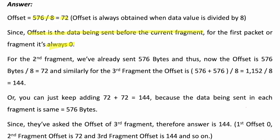For the second packet, we have already sent 576 bytes, so the offset is 576 divided by 8, which equals 72. For the third fragment, we have already sent 2 fragments, so the value is 576 plus 576 divided by 8, which is 1152 divided by 8, equal to 144. You can also keep adding 72 each time: 72 plus 72 equals 144. Since they asked for the offset of the third fragment, and 2 packets were sent before it, the answer is 144.